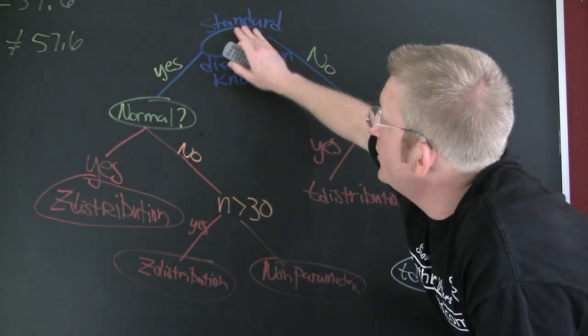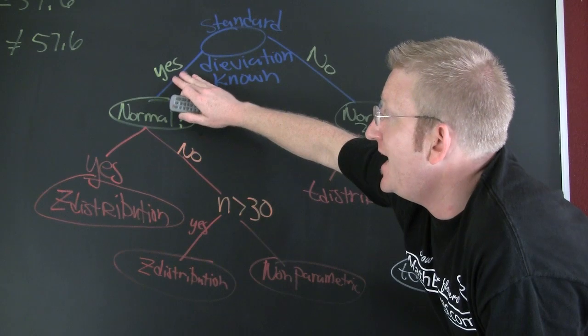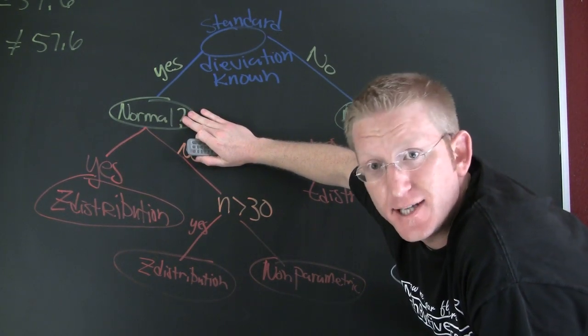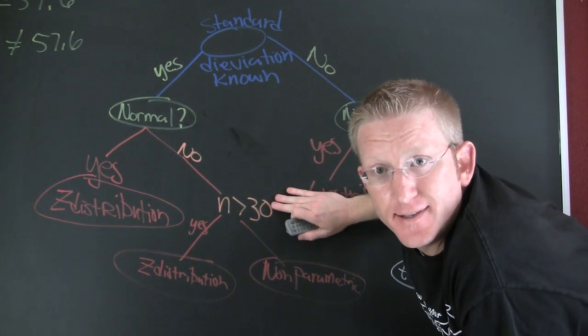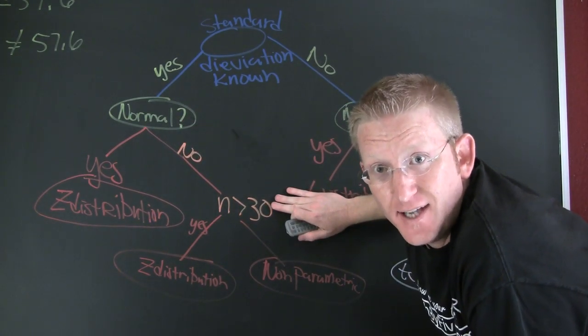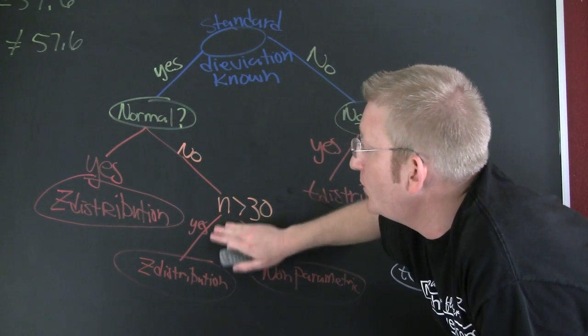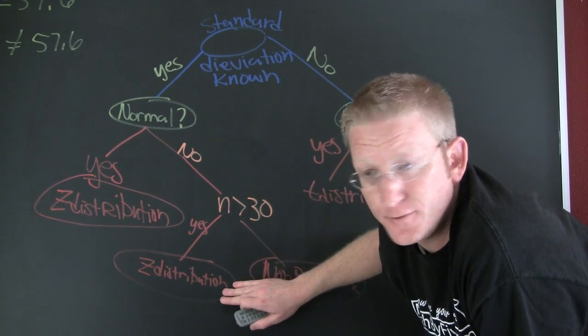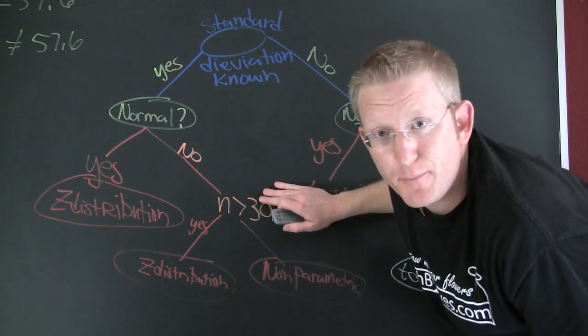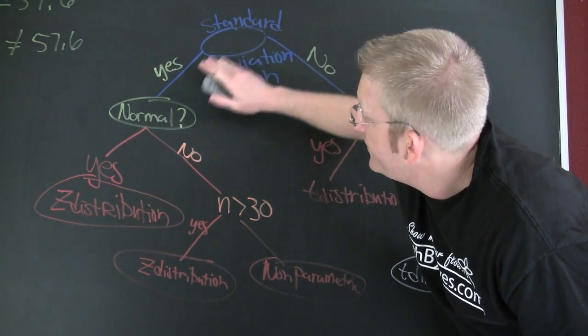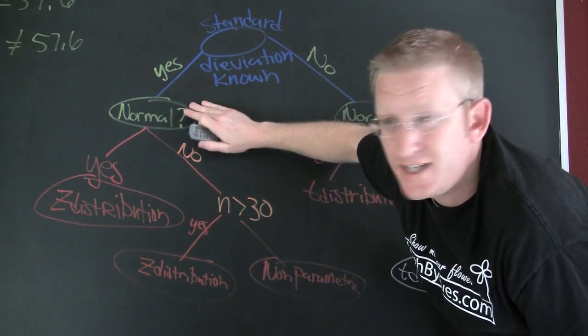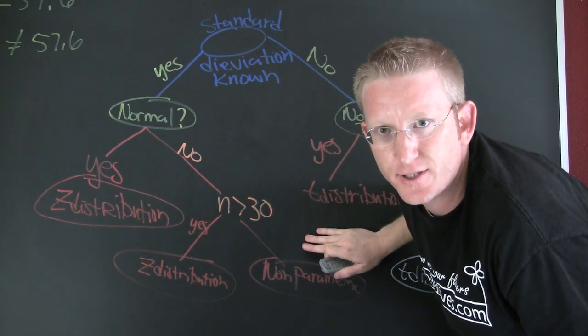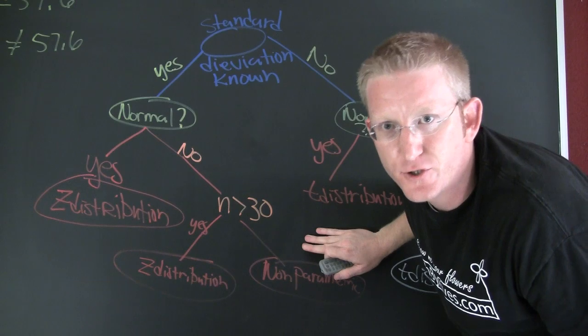If you know the standard deviation and it's not normal, can we invoke the central limit theorem? That's what this next question asks. Is n bigger than 30? If we can, and n is bigger than 30, then we can use the z-table because the central limit theorem allows us to. If it's not bigger than 30, standard deviation is known, it's not normal, it's not bigger than 30, that's non-parametric. That means some other bootstrappy kind of method.